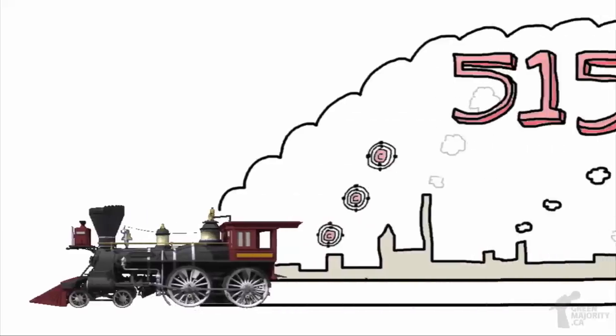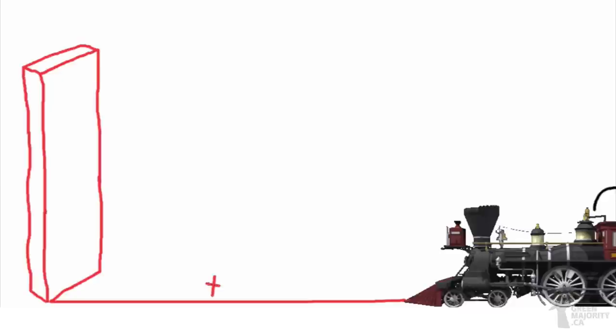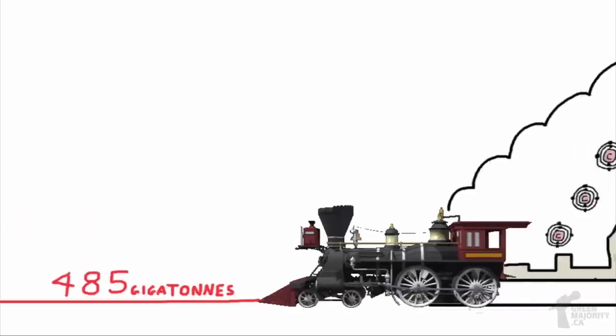From the beginning of the Industrial Revolution, we've spent about 515 gigatons, leaving us with 485 gigatons of carbon left to emit before hitting that 2 degree warming barrier. The first half of our budget was spent over the past 200 years to build the society in which we live today.